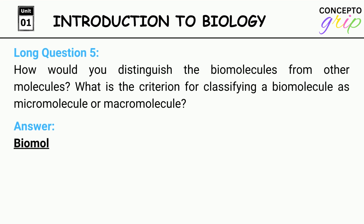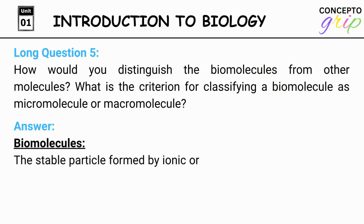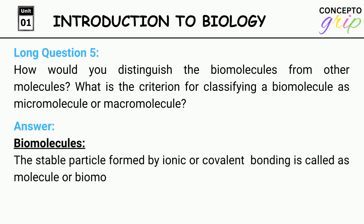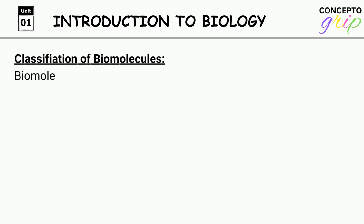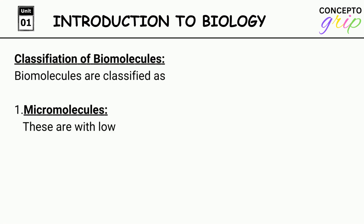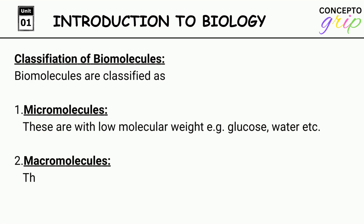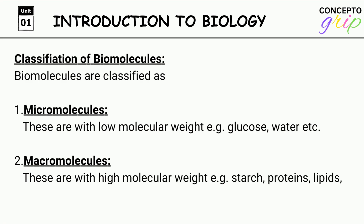Long question 5: How would you distinguish biomolecules from other molecules? What is the criterion for classifying a biomolecule as a micromolecule or macromolecule? Answer. Biomolecules: The stable particle formed by ionic or covalent bonding is called a molecule or biomolecule. Classification of biomolecules: 1. Micromolecules — these are with low molecular weight, for example glucose, water, etc. 2. Macromolecules — these are with high molecular weight, for example starch, proteins, lipids, etc.